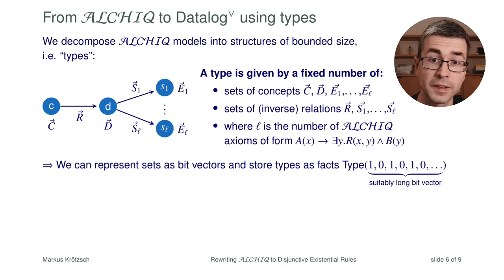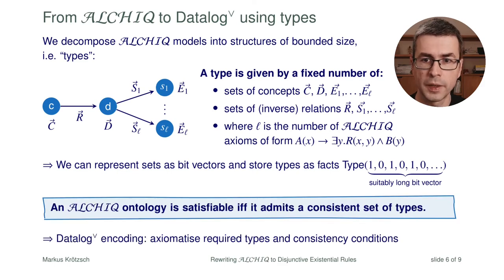Now why do we want to represent these types? The idea with any type-based calculus is that the satisfiability of a logical theory is equivalent to the existence of a suitable complete and consistent set of types. An ALCHIQ ontology is satisfiable if and only if it admits a consistent set of types. What does consistent mean? First of all, each of the types themselves have to satisfy the requirements stated in the ontology. So all the axioms of the ontology as far as they apply to this small structure have to be true.